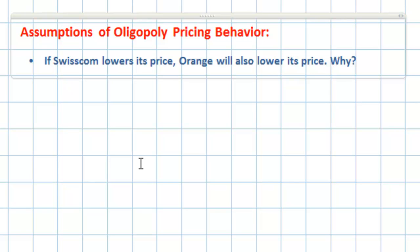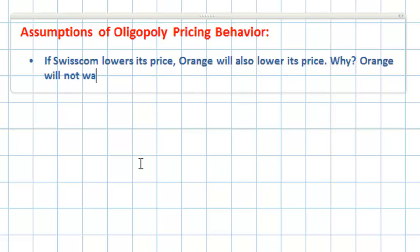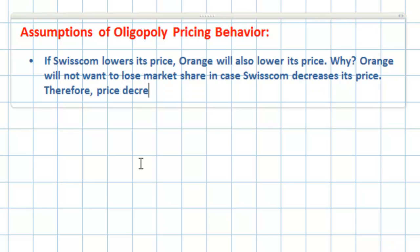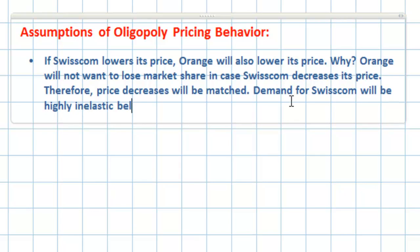Orange's revenues and profits depend as much on the price that Swisscom charges as they do on the price that Orange charges, and vice versa. Orange will not want to lose market share in case Swisscom decreases its price. Therefore, price decreases will be matched. The implication is that demand for Swisscom will be highly inelastic below $60, because the competitor Orange will also lower its price. Therefore Swisscom cannot hope to gain a significantly larger market share by decreasing its price.